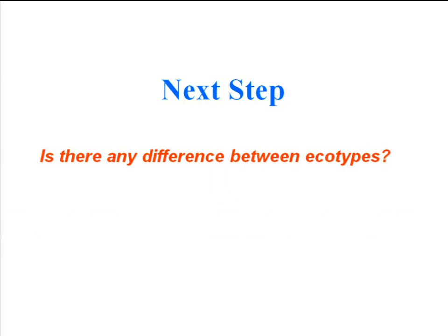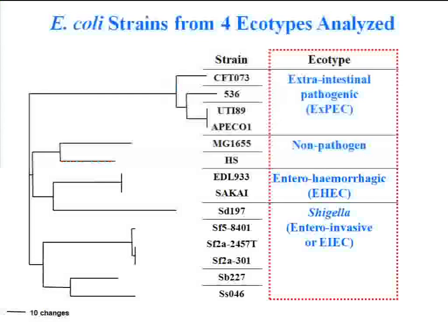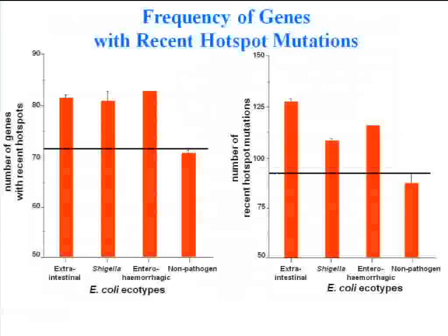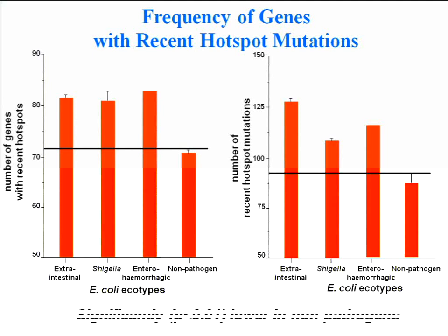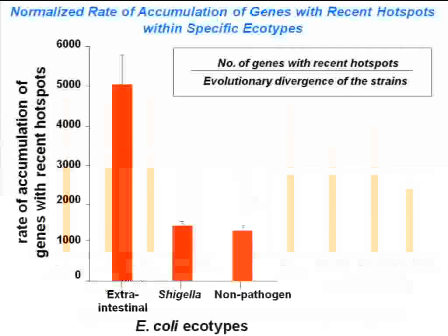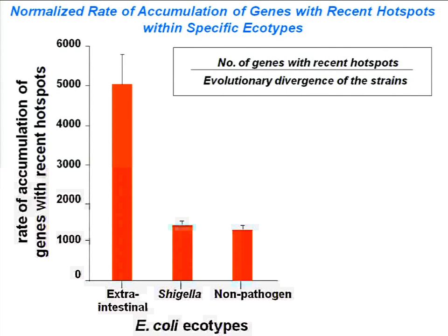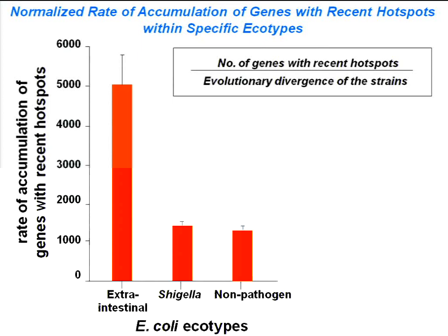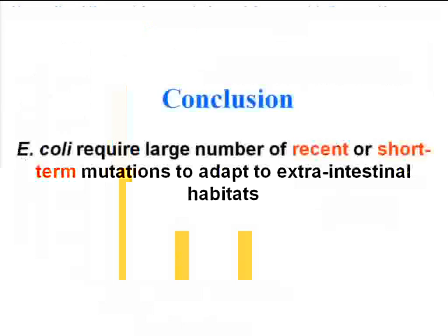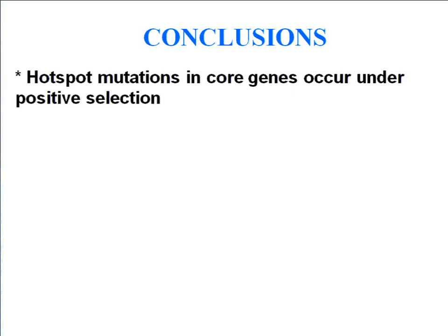What does this mean in terms of differences between ecotypes? We are working on four different ecotypes — one non-pathogenic and three pathogenic. We found that the frequency of genes with recent hotspot mutations, as well as the number of recent hotspot mutations, is significantly lower in non-pathogens. We also calculated the rate of evolution of genes with recent hotspots within specific ecotypes, normalized through evolutionary divergence of strains within each ecotype. We found a high rate of accumulation in extra-intestinal pathogens, which totally conforms with our findings for FimH.